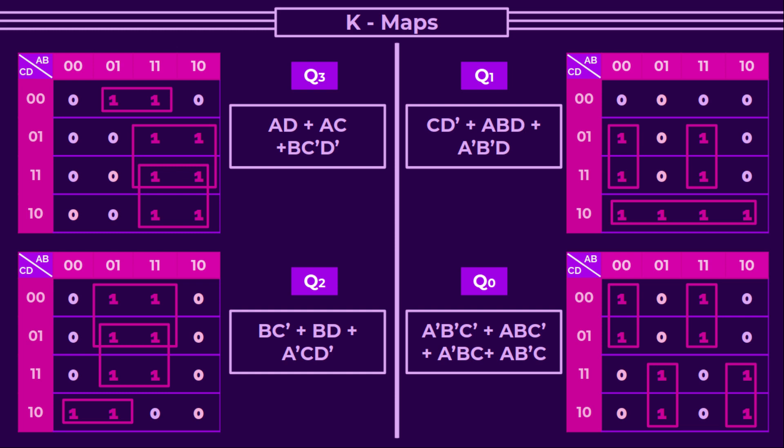The k-map expressions for the 4-bit counter are: Q3 = A·D + A·C + B·C'·D'; Q2 = B·C' + B·D + A'·C·D'; and Q0 = A'·B'·C' + A·B·C' + A'·B·C + A·B'·C. The ones are grouped in the k-maps to derive these next-state expressions with respect to the present state inputs A, B, C, and D.